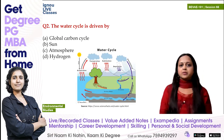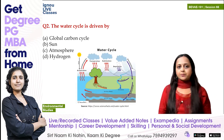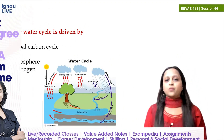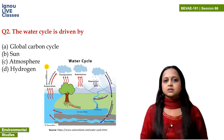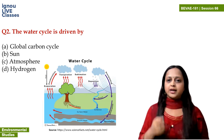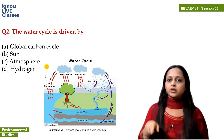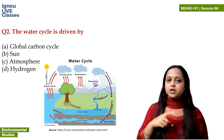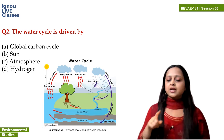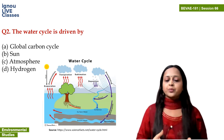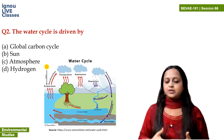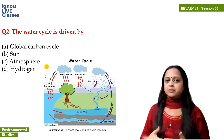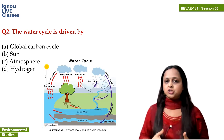Moving on to the next question: the water cycle is driven by what? The picture on screen shows the water cycle. There are many processes in the water cycle — water is in a continuous cycle on Earth. The processes in the water cycle include condensation, transpiration, sublimation, deposition, and precipitation.